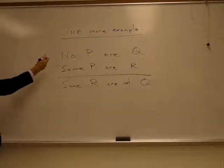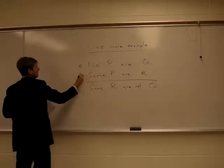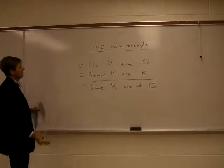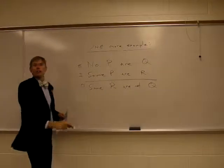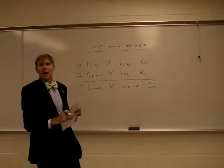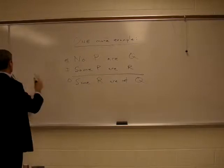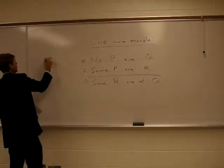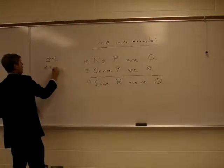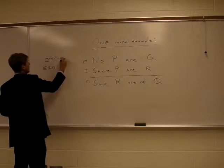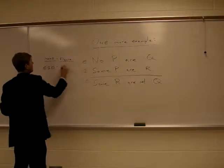Now the mood of this one is EIO and our figure is 3 because our middle term is the subject of both major and minor term. So our mood, just write it down, is EIO and its figure is 3.